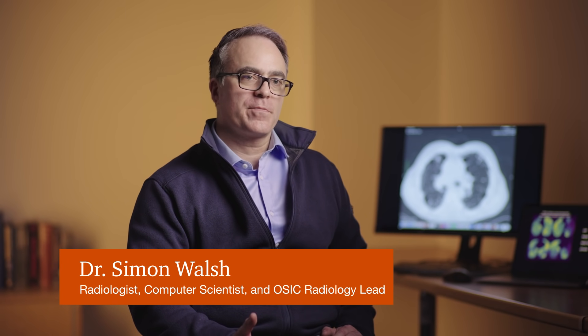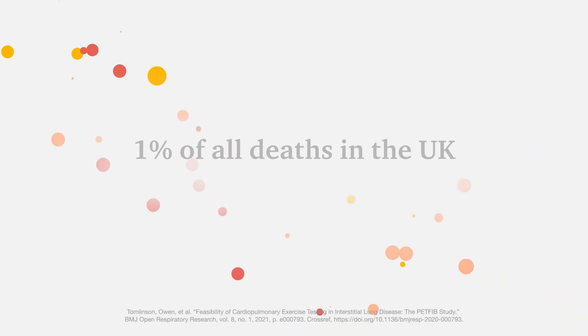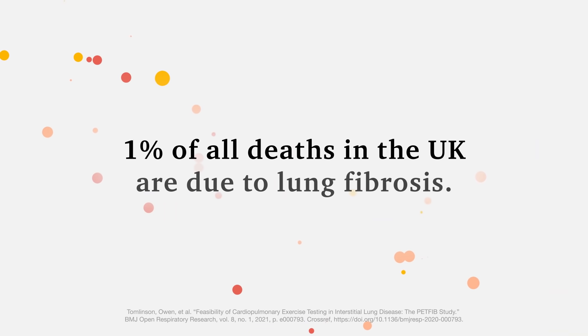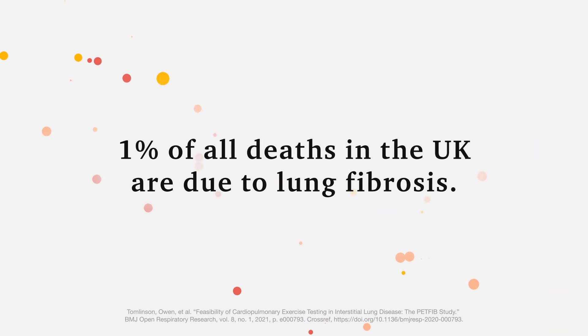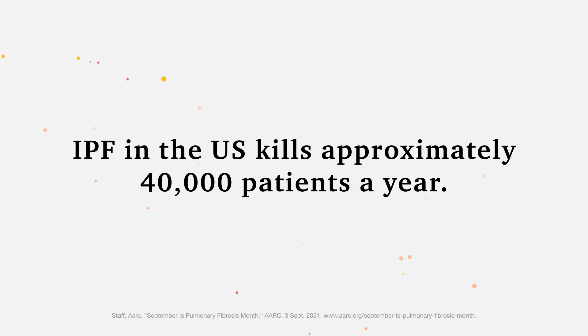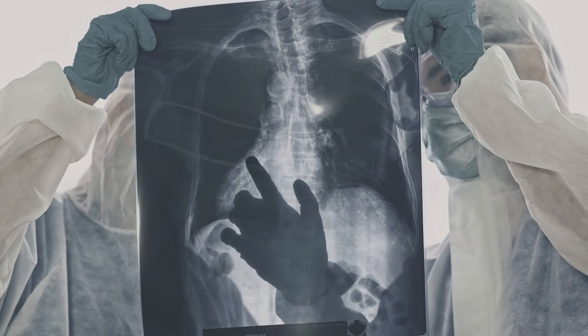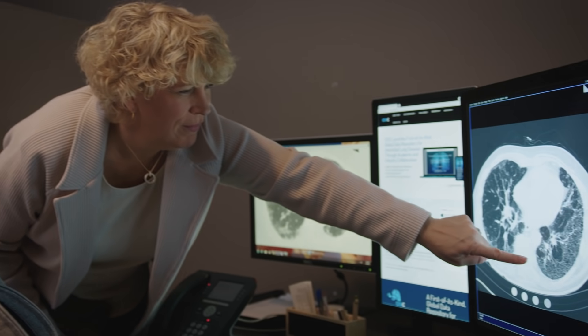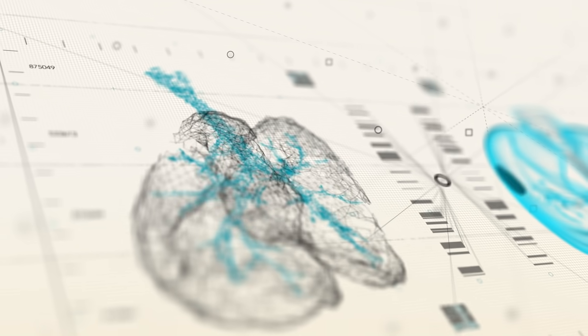Fibrotic lung disease is a seriously under-recognized public health problem. 1% of all deaths in the UK are due to lung fibrosis. IPF in the US kills approximately 40,000 patients a year. Idiopathic pulmonary fibrosis is the scarring of the lungs — idiopathic means no known cause — and it's a very difficult disease to diagnose. That's what the Open Source Imaging Consortium is designed to do: to help understand this disease better.